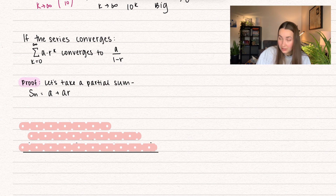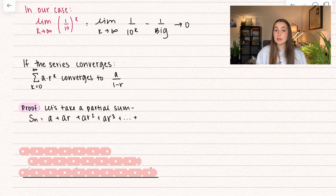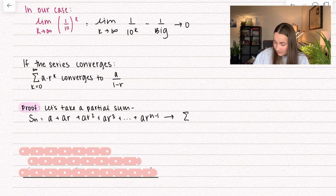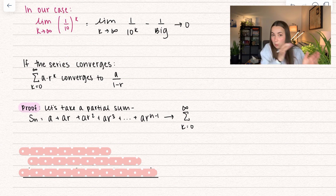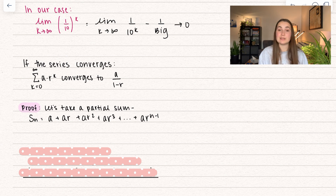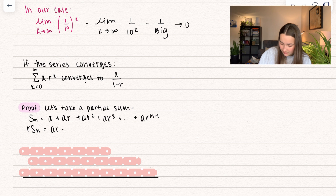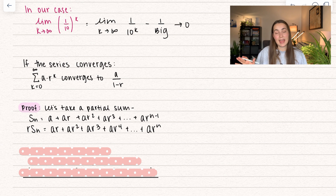I'm going to go all the way down to my nth term, but notice that's actually going to be n minus 1, because the summation starts at 0. So the nth term is actually 1 less than n, because we're not starting at 1. What I'm going to do is multiply this entire equation by r. So I get r times sn is equal to a times r, a times r squared, a times r cubed, a times r to the power of 4, and that's going to go all the way down and now we just get that nice r to the n.